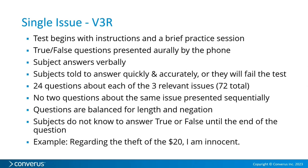They don't know if they're going to answer true or false until the statement gets to the very end. There are three issues in this test, only one of which the guilty folks are programmed for — the other two they were not. No two questions about the same thing are asked in a row — they're mixed up and presented randomly. The statements are balanced for length and for negation.